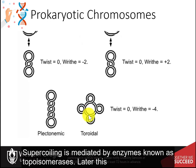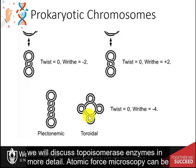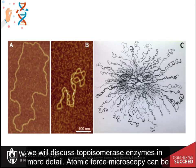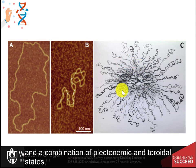Supercoiling is mediated by enzymes known as topoisomerases. Later this term, when we are focused on the processes of DNA replication and transcription, we will discuss topoisomerase enzymes in more detail. Atomic force microscopy can be used to visualize some of these different states, including the relaxed, plectonemic, and a combination of plectonemic and toroidal states.